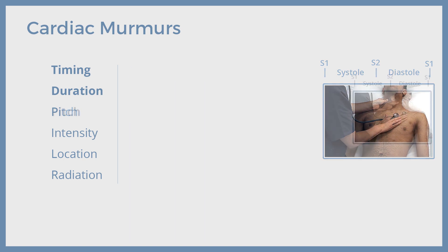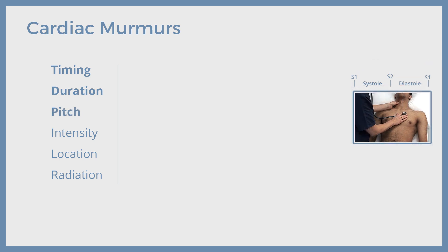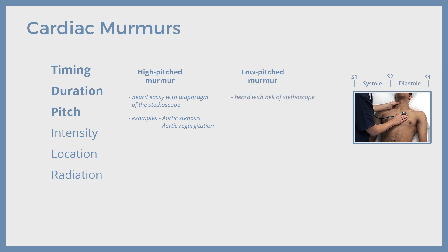Now let's explore murmur types based on their pitch. The pitch of a murmur is either high or low. High-pitched murmurs are easily audible with the diaphragm of the stethoscope — murmurs of aortic stenosis and aortic regurgitation are high-pitched. A low-pitched murmur, on the other hand, is audible with the bell of the stethoscope with careful listening. An example is the mid-diastolic rumble of mitral stenosis.